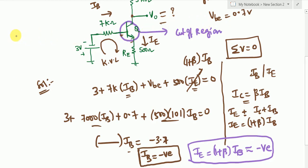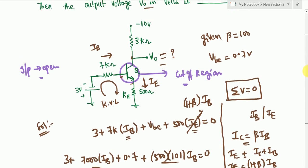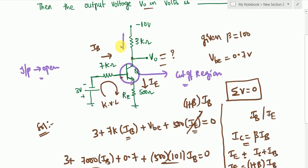Which means input junction is open. So we call this as in cutoff region. If this BJT is in cutoff region, then the current flowing through this will be 0. So the current will be 0. Now the drop across this 3kΩ is also 0, drop = 0.